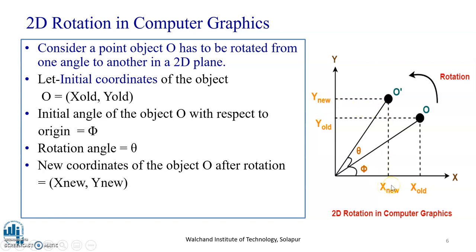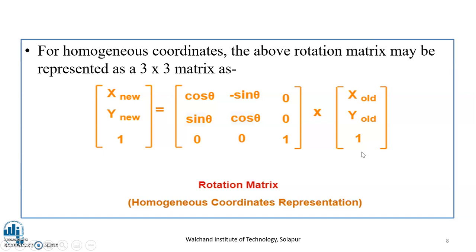On solving the trigonometric equation with respect to phi and theta, we obtain a matrix. For the convenience of understanding, I have represented the matrix for rotation using homogeneous coordinates and represented in a 3 by 3 matrix. The point after rotation, X-new, Y-new, 1, is equal to cos theta minus sin theta 0, sin theta cos theta 0, 0 0 1, into X-old, Y-old, 1. This matrix is a rotation matrix represented using homogeneous coordinate representation.